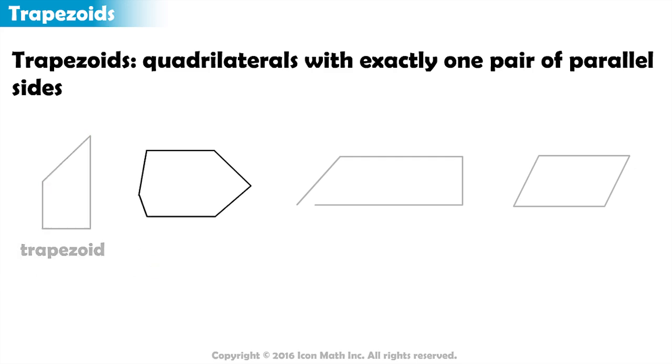Now this shape has one pair of parallel sides. Does that make it a trapezoid? Well, no. Notice that it is not a quadrilateral. Remember, a trapezoid is a special type of quadrilateral. And since this polygon is not a quadrilateral, then it can't be a trapezoid.